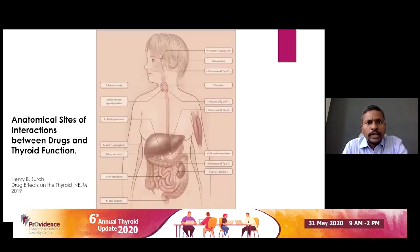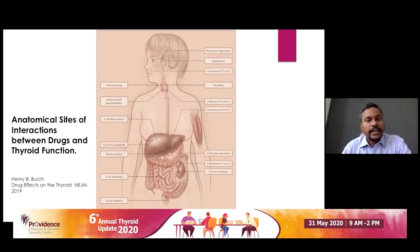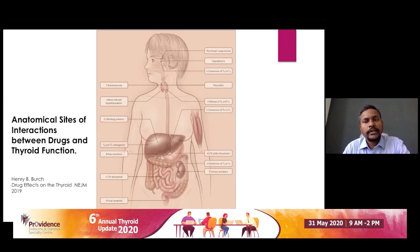From the anatomical point of view, drug effects on the thyroid can occur at four points. One is the pituitary level, second is the thyroid level, third is the hepatic level, and fourth is the intestine level. At the pituitary level it can cause thyrotropin suppression — TSH suppression is caused by many drugs. Hypophysitis is caused by some drugs, and there is also reduced conversion of T4 to T3.